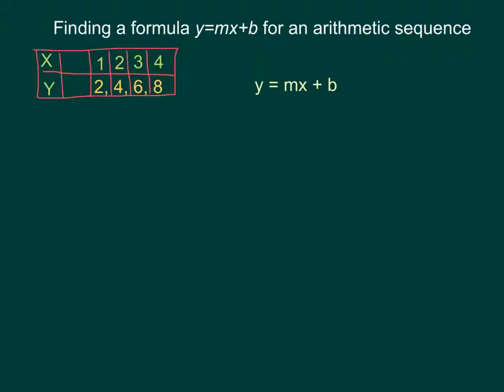We're going to say the first one is number 1, the second one is number 2, the third is number 3, and the fourth is number 4, and so on. The values themselves are going to be the y values, and their place is going to be the x values.